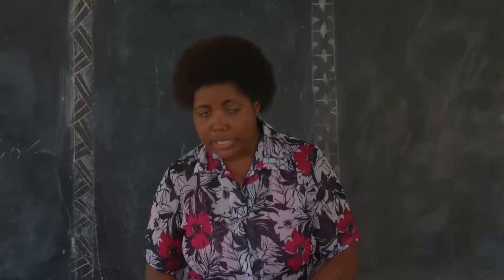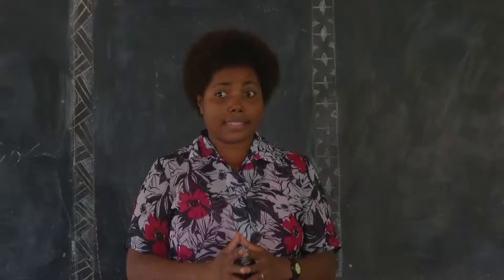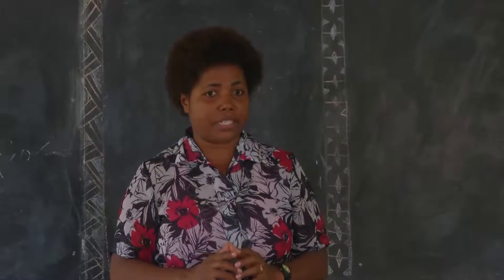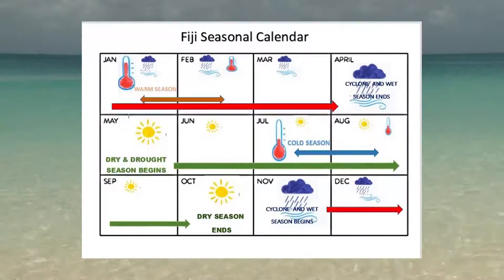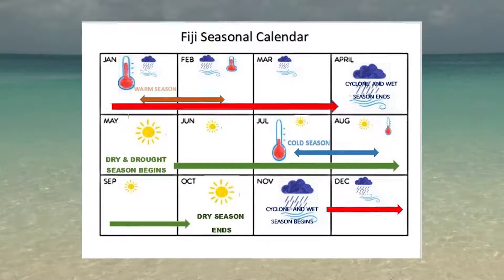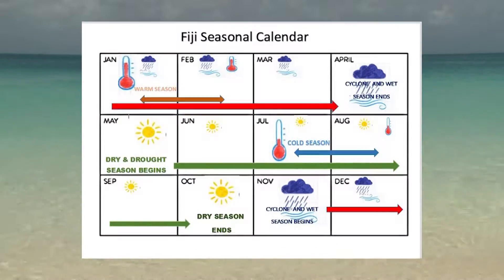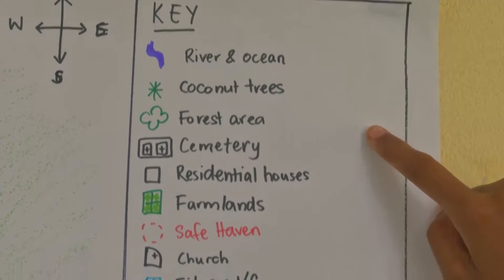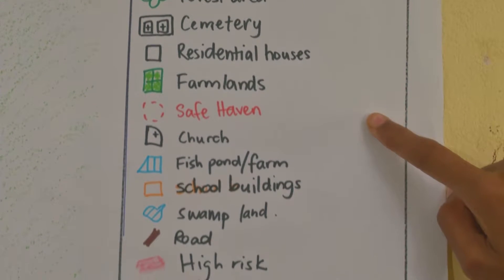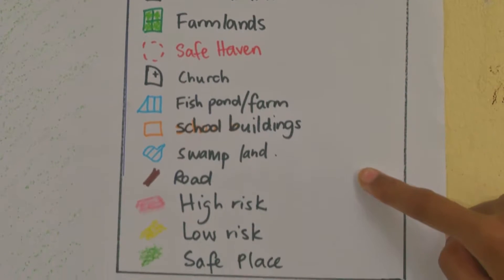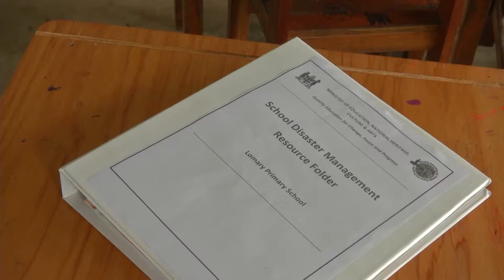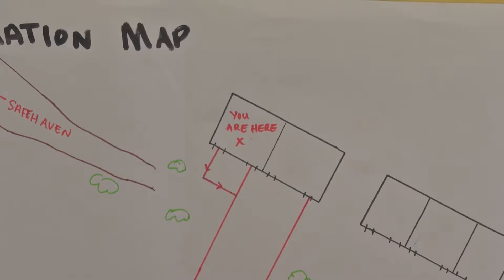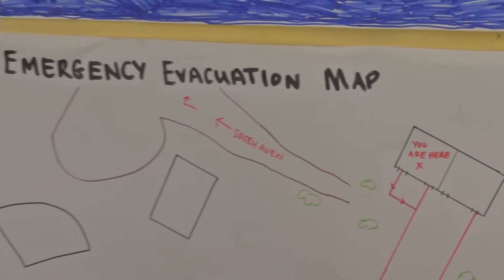In class, we learn about hazards and dangers that exist in our school environment. We drew a seasonal calendar of when hazards occur and we made a community map showing our strengths and capacities and showing our hazards. You can see this information in our school disaster management plan and our school evacuation plan.